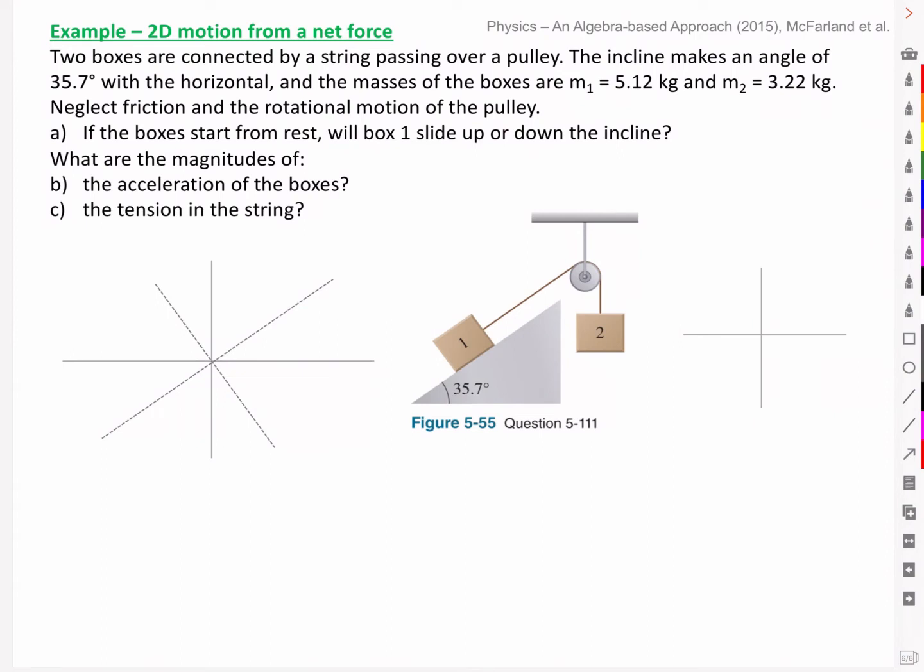Hello class. Here we're going to look at an example with 2D motion from a net force, where we've got two masses hanging over a pulley, but we've got the added complexity here that one of them is on an incline plane.